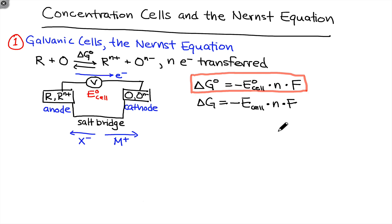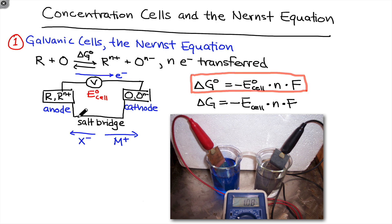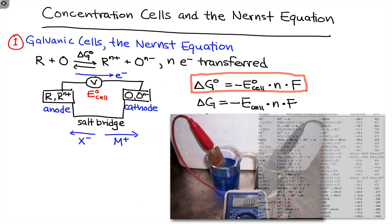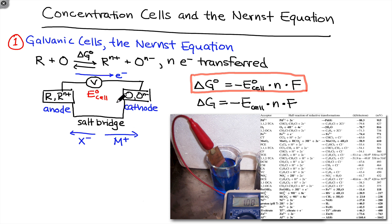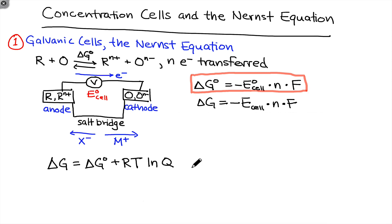What if we know the standard cell potential and want to know the non-standard cell potential under a given set of reaction conditions? This is a very common scenario — we typically don't know the ΔG value or it's difficult to calculate. However, the way we set up a galvanic cell tells us the conditions: we know the concentrations of Rⁿ⁺ and Oⁿ⁻ in the anode and cathode, and we can easily find the standard cell potential by looking up standard reduction potentials. So how can we relate the standard cell potential and the reaction conditions to the non-standard cell potential?